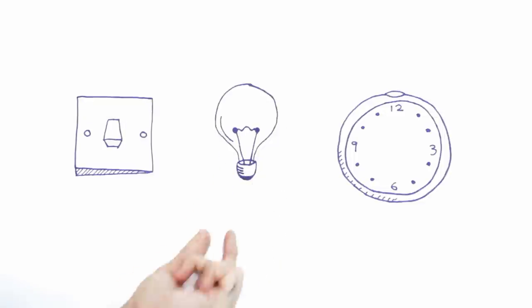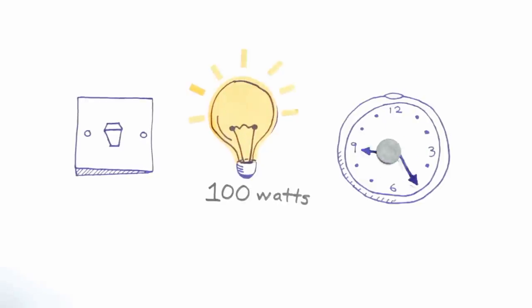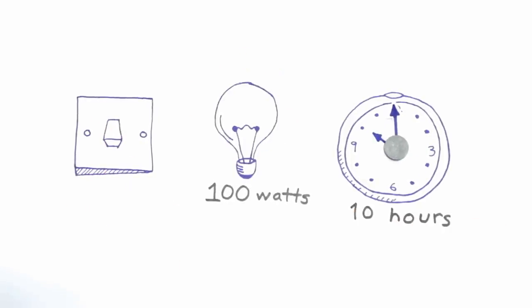Still confused? Here is an example. We would have to leave a 100 watt light bulb on for 10 hours to consume 1 kilowatt hour of electricity.